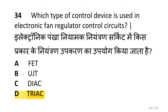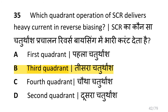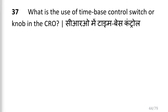Which type of control device is used in an electronic fan regulator's control circuit? i.e. triac. Which quadrant operation of SCR delivers heavy current in reverse biasing? i.e. third quadrant. Which logic gate refers to the truth table? i.e. NOR gate.